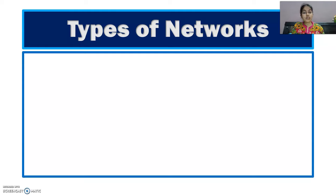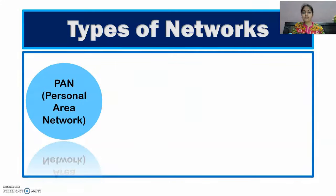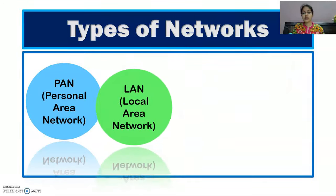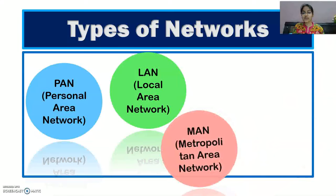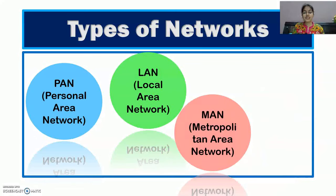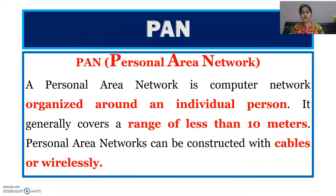Next we will discuss the types of network. We are having four types of network. First is PAN — Personal Area Network. Then we are having LAN — Local Area Network. Then MAN — Metropolitan Area Network. And last is WAN — Wide Area Network. Now we will discuss these types of networks one by one.